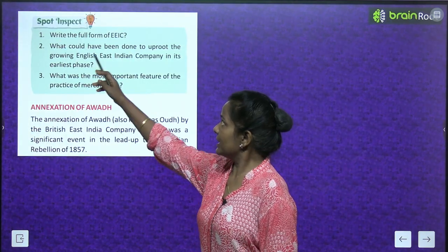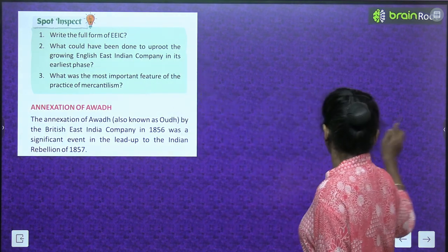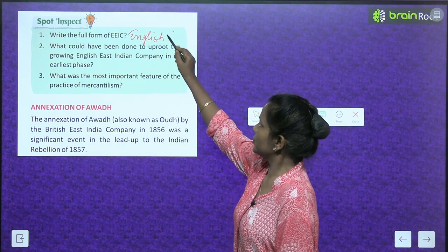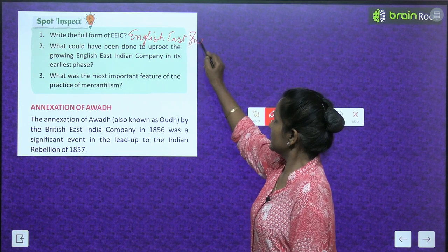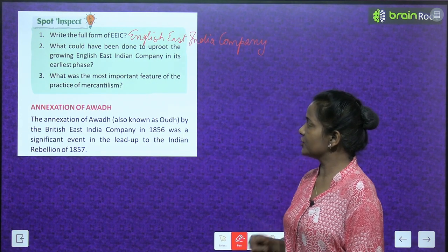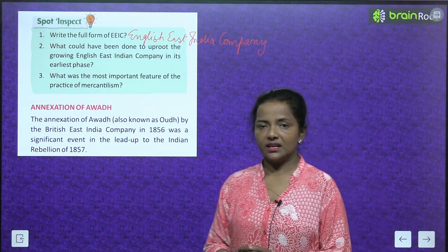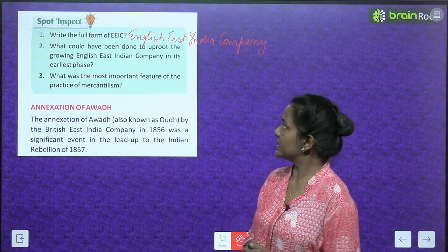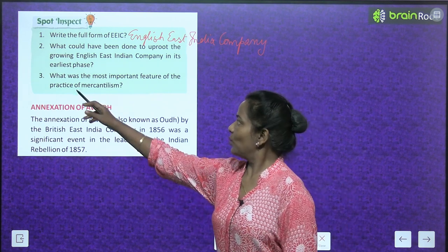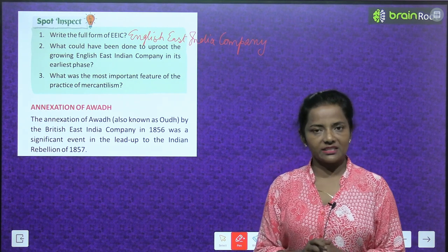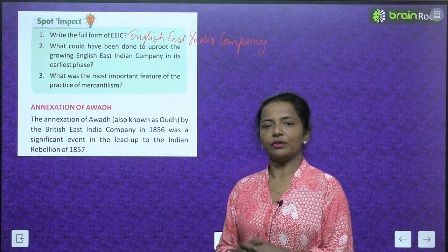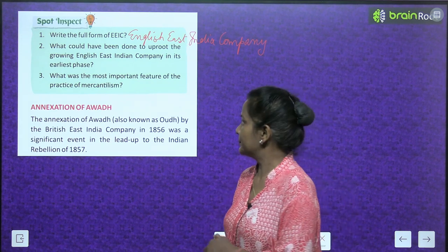Spot inspect children: Write the full form of EEIC — it is English East India Company. What could have been done to uproot the growing English East India Company in its earliest phase? What was the most important feature of the practice of mercantilism? The most important feature was to emphasize the accumulation of wealth, mainly in the form of gold and silver.